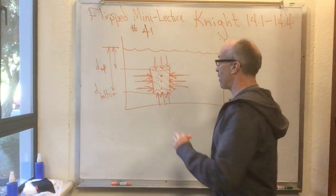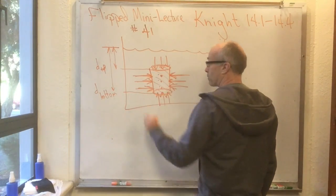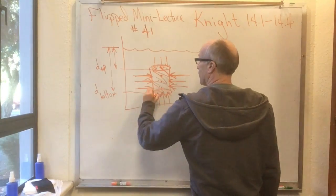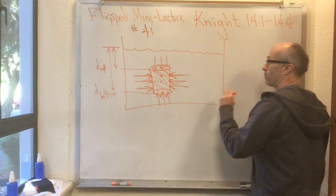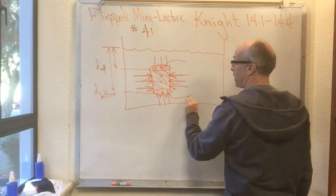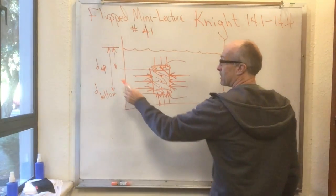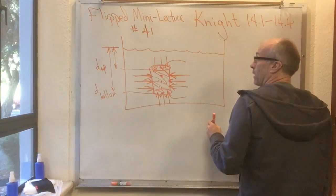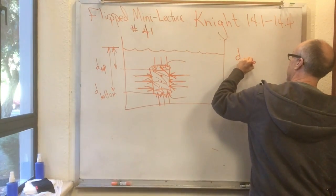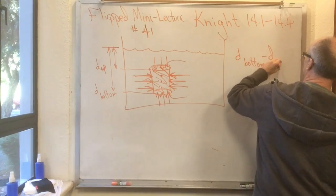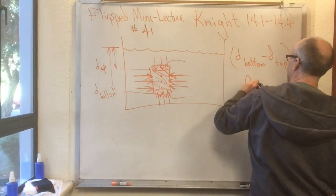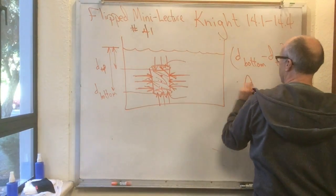But here's the tricky part: the top and bottom forces are not going to balance. How do we know that? Because this tin can has some volume. The top of the tin can has area A, the bottom has area A, and its height is d-bottom minus d-top. So the volume of this tin can is (d-bottom minus d-top) times A.